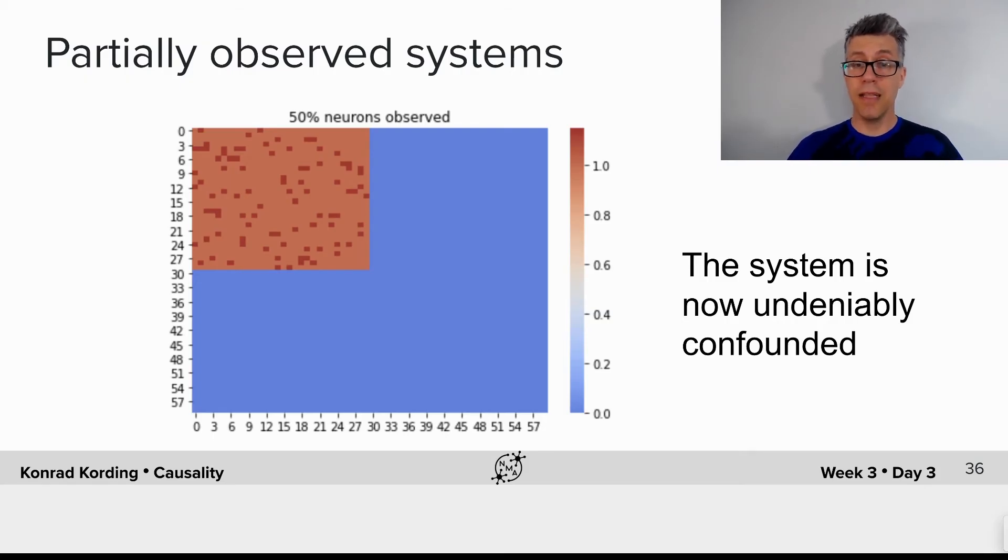In this case the system is confounded. What do I mean by that? There exist neurons that are not recorded that affect what the system does and that's what we have denoted here with blue. These neurons are simply not observed. They're still there.